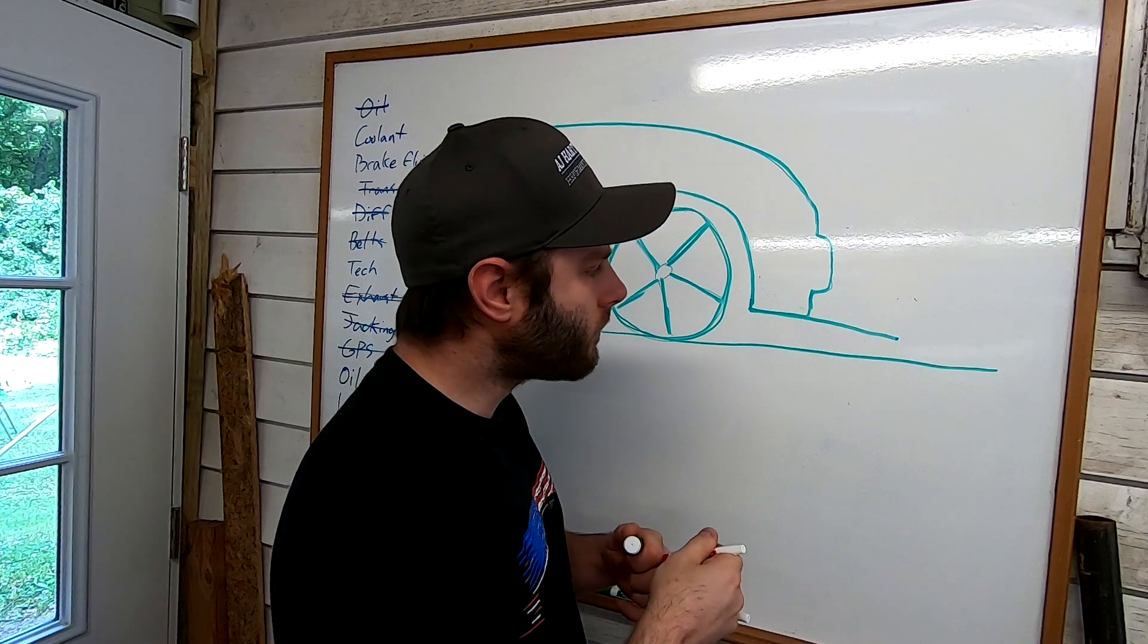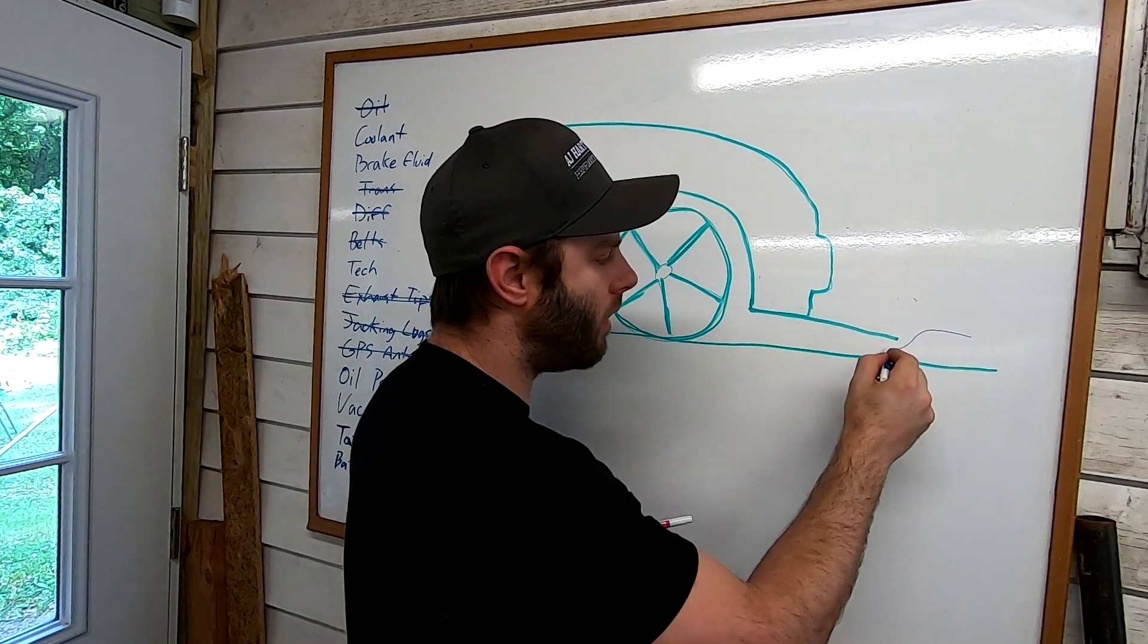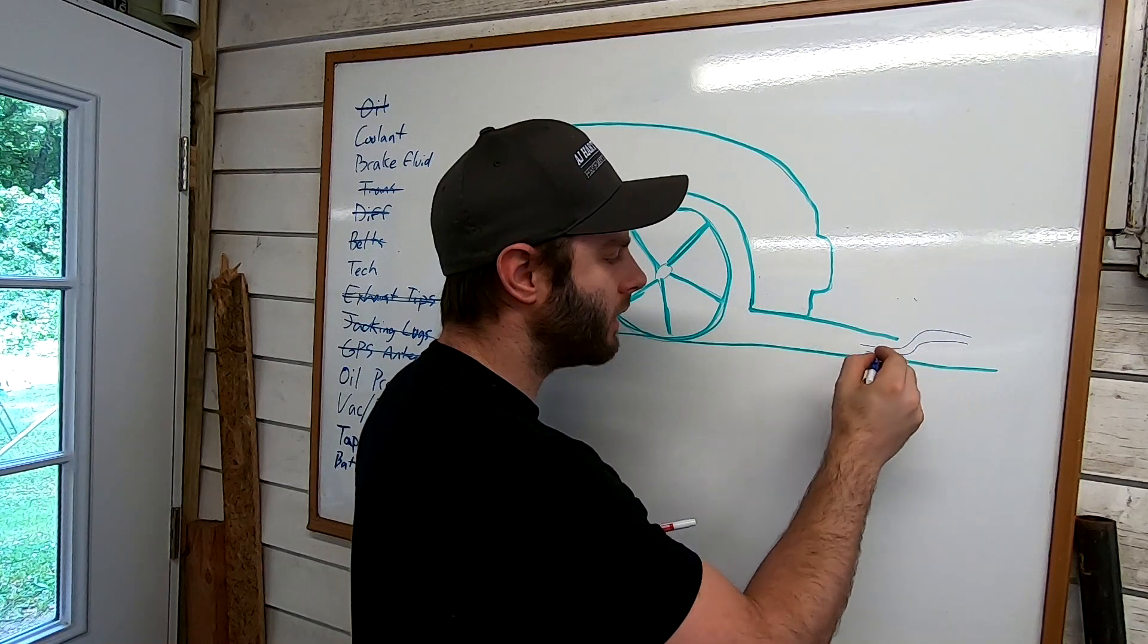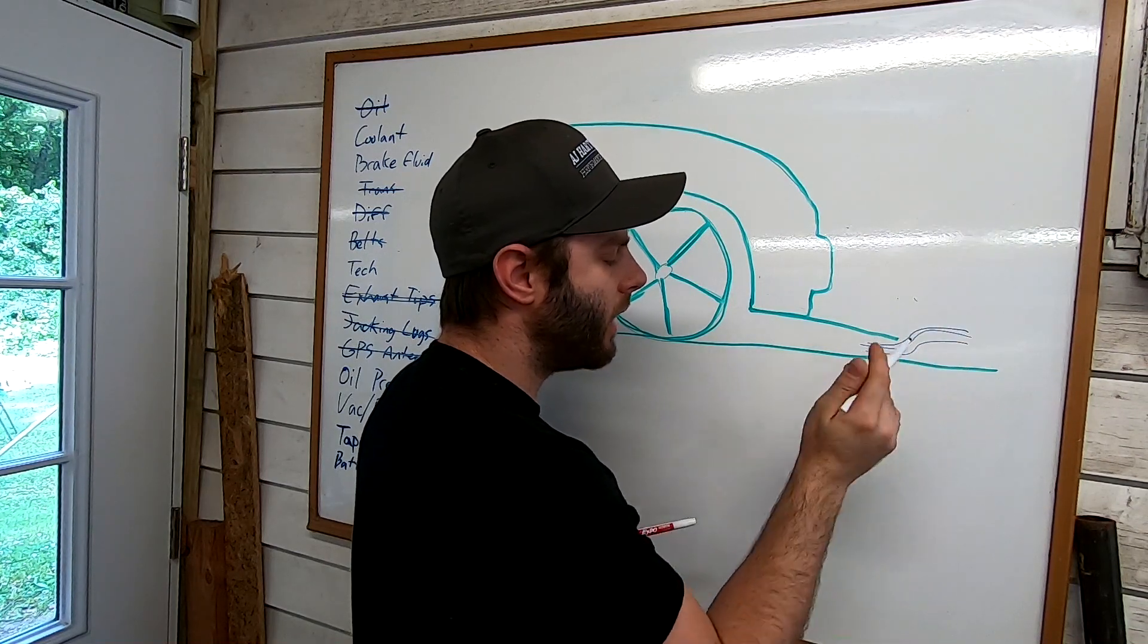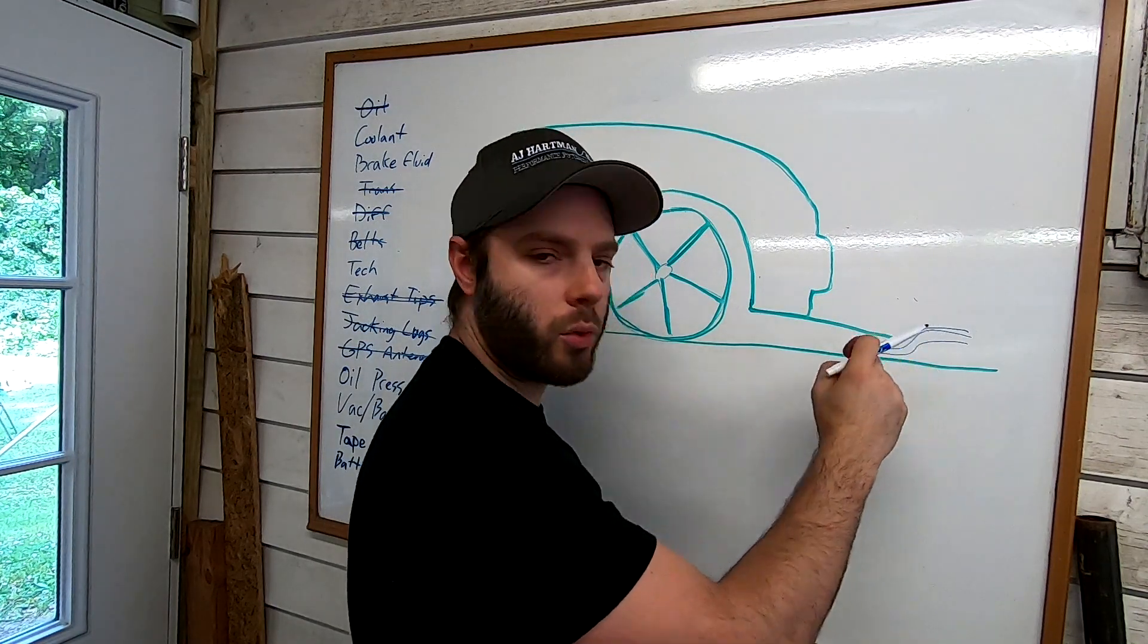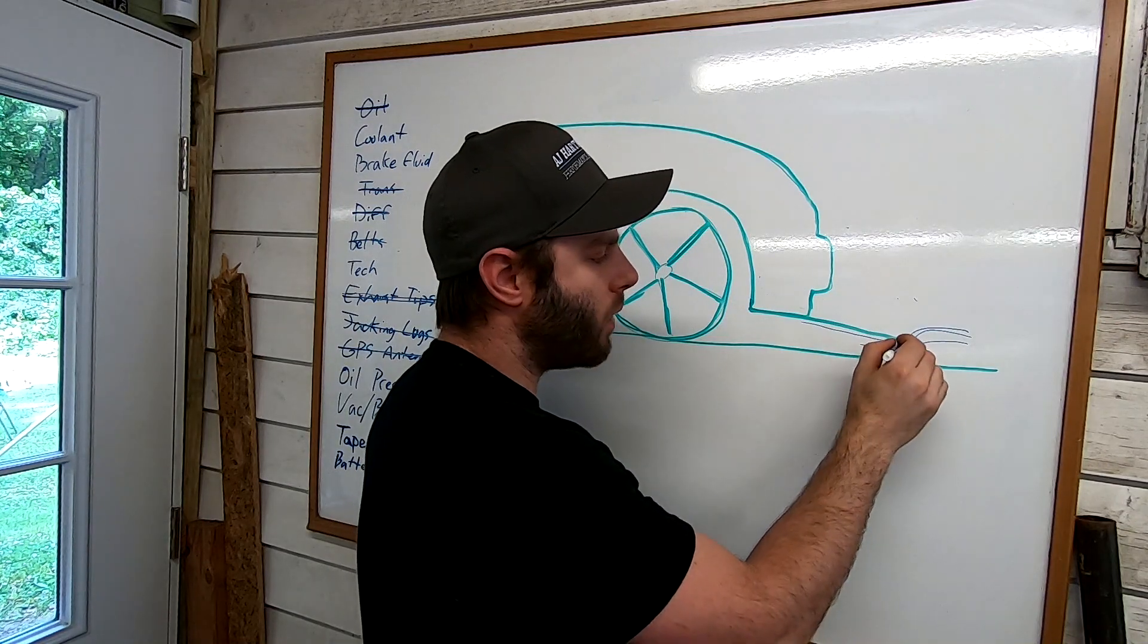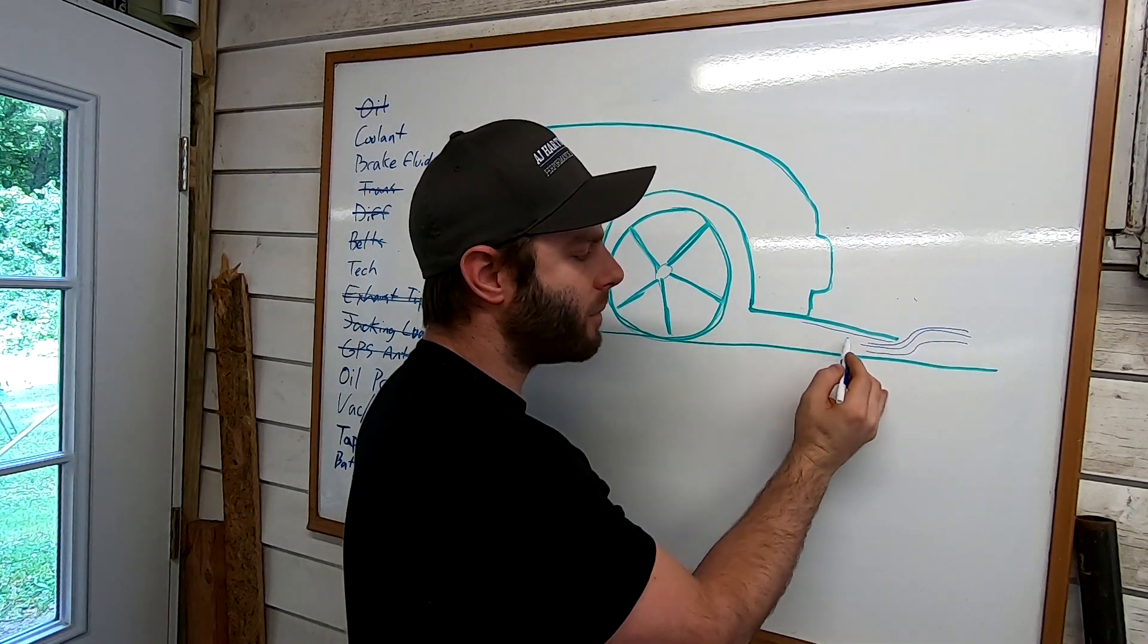So that way when the air comes in, it will almost get squeezed here, and from Bernoulli's principle we know that when air gets squeezed, it speeds up across the surface. And when air speeds up across the bottom of the splitter here, you get that low pressure creating the downforce.